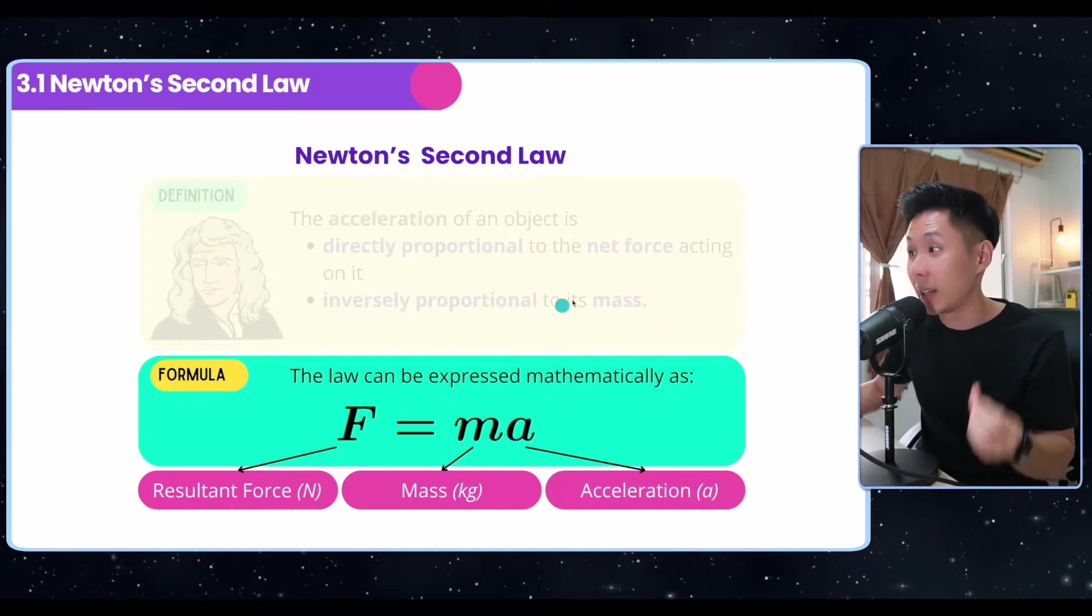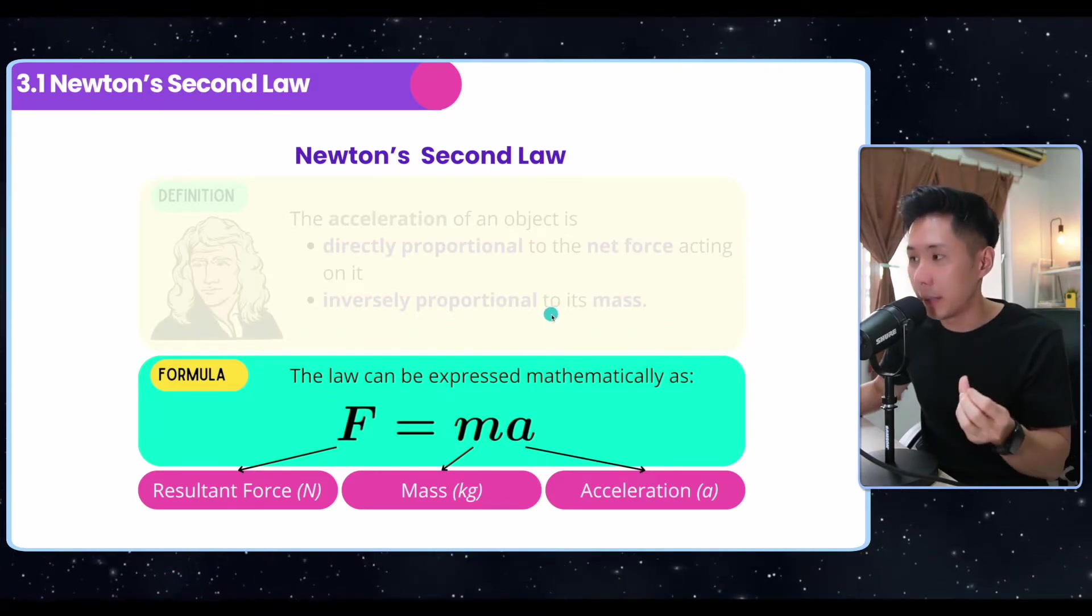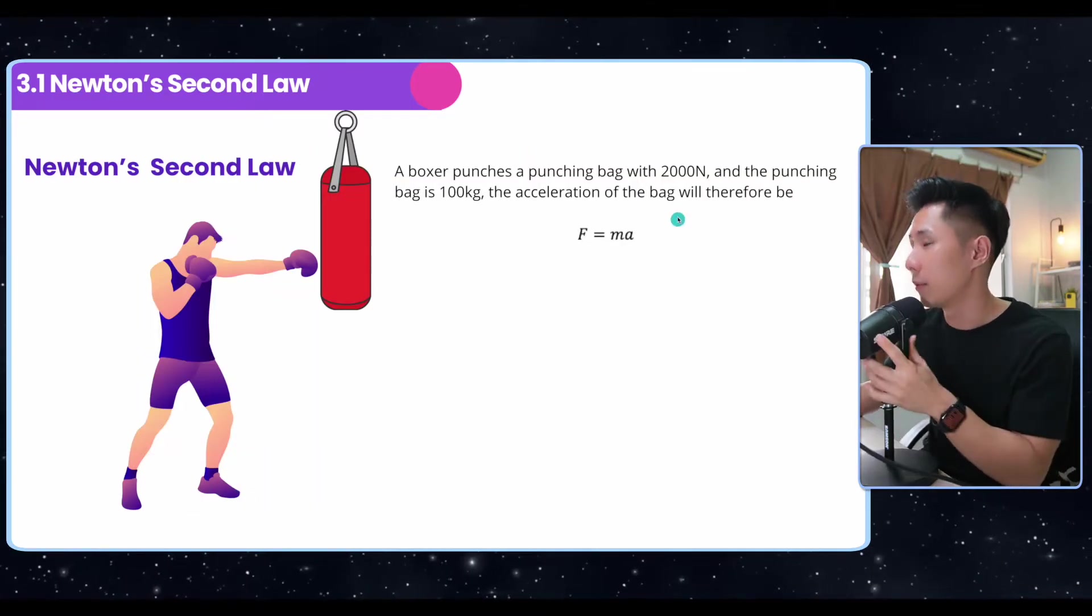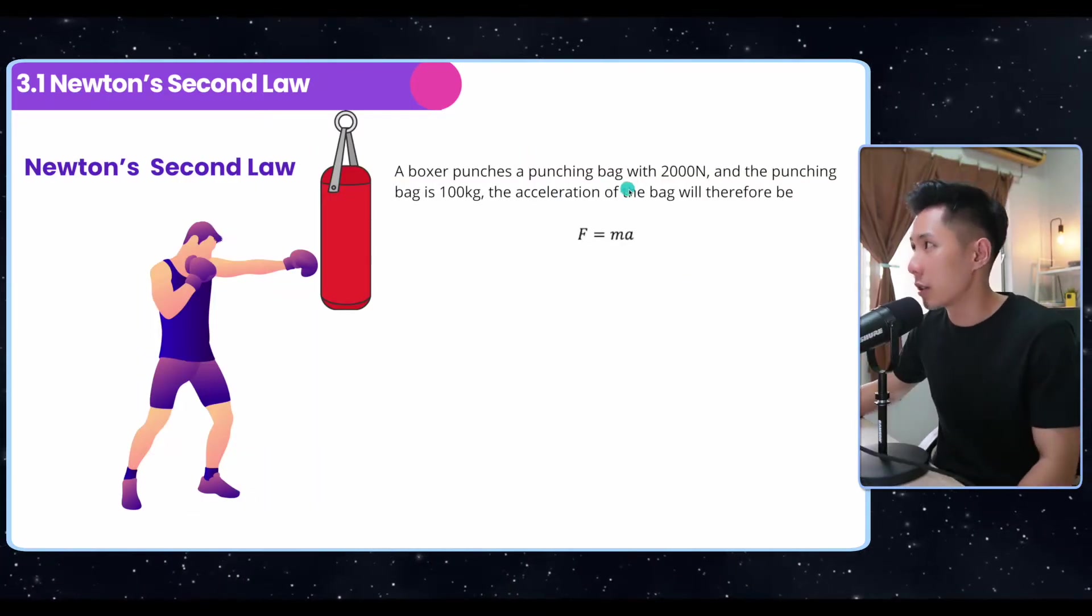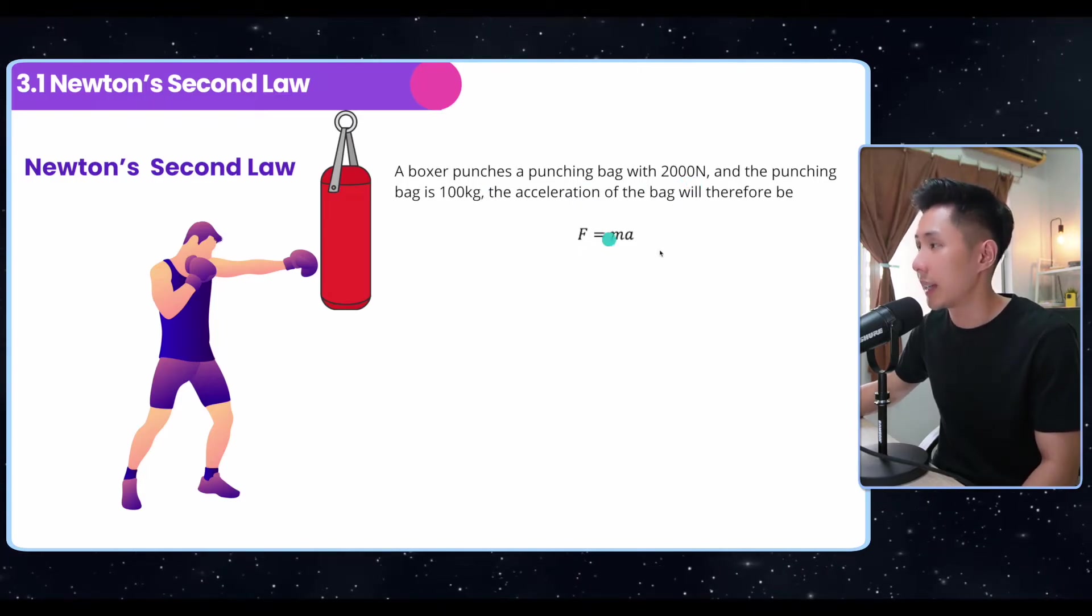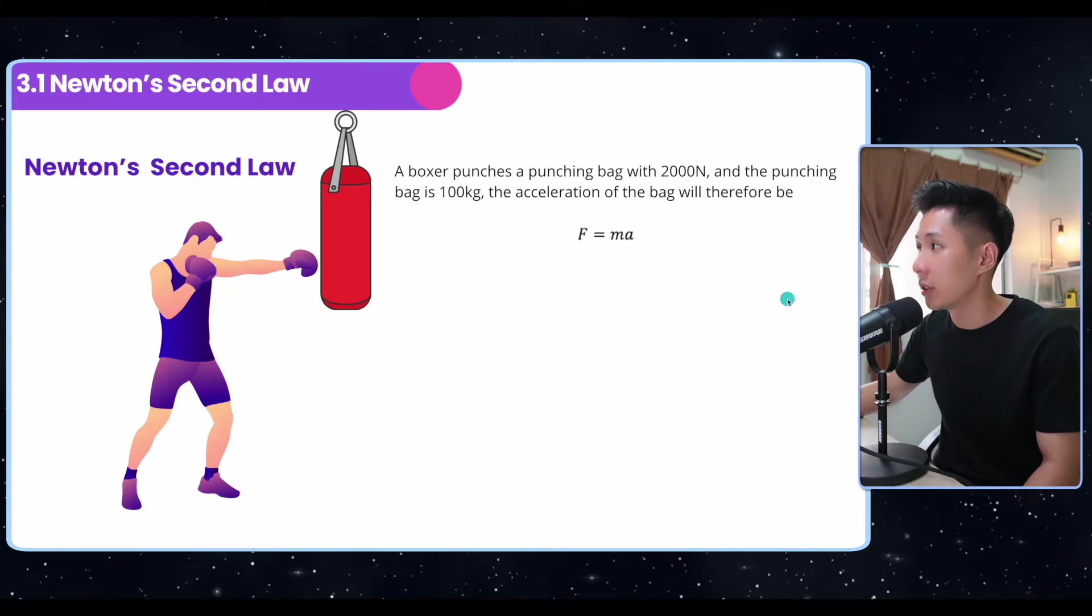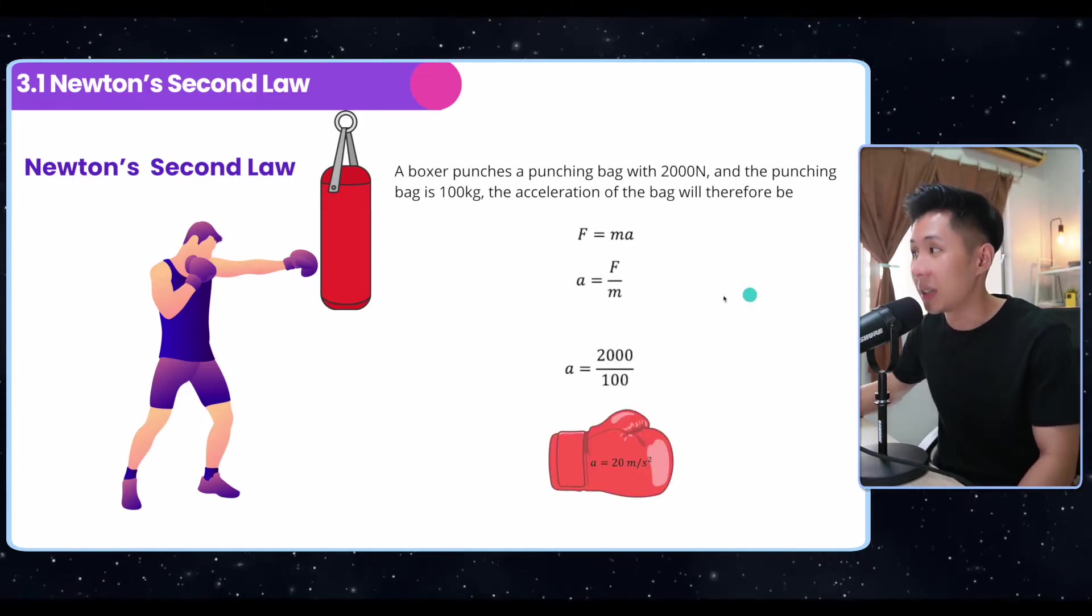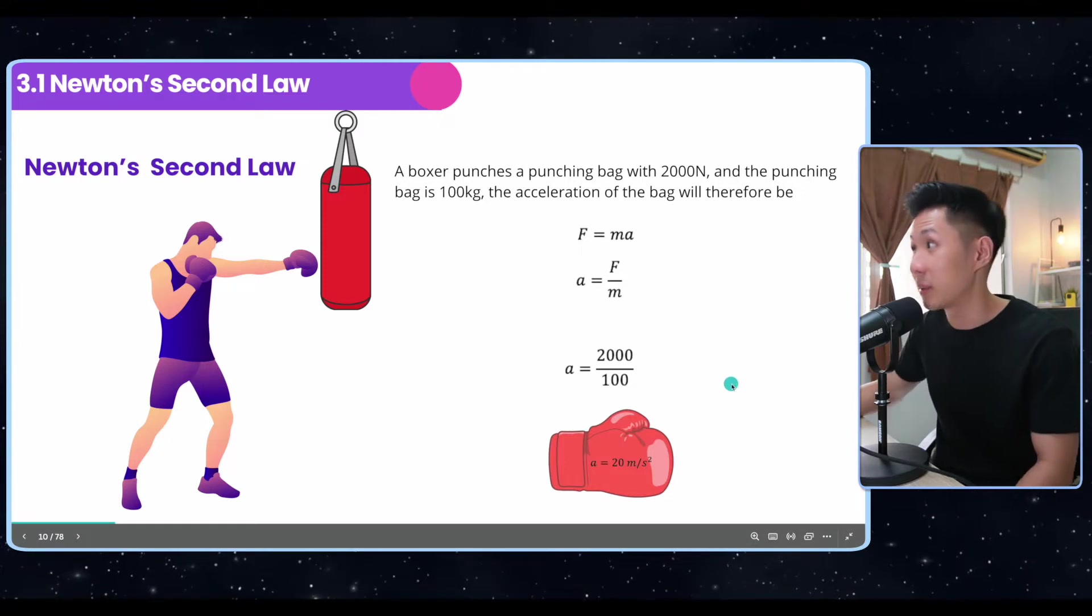For Newton's second law, there's a formula to express it mathematically, which is F equals ma. We learned it in IGCSE already. Let's solve some real questions. A boxer punches a punching bag with 2000 Newtons, and the punching bag is 100 kg. We can just substitute all the known quantities into the formula and find out the acceleration, which is 20 meters per second squared.